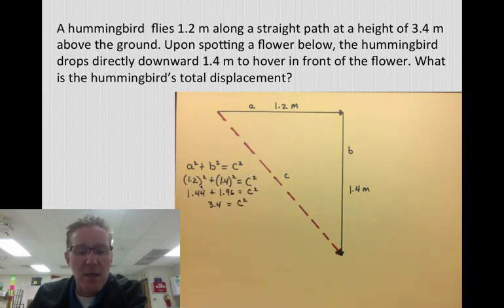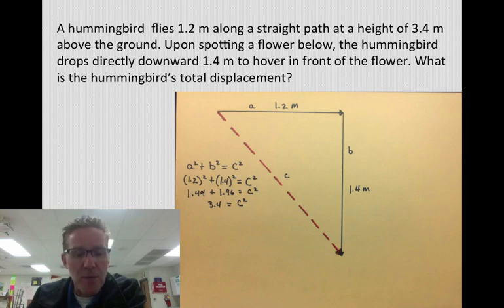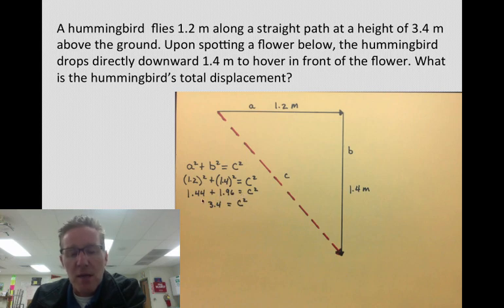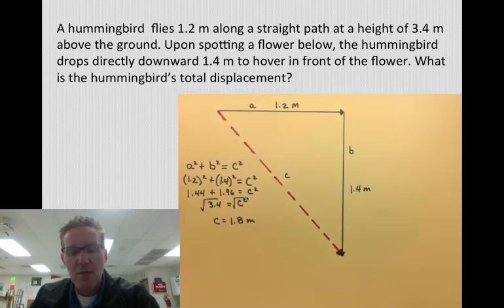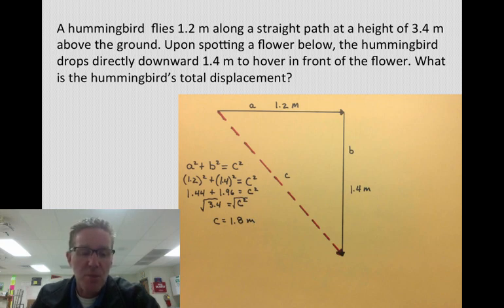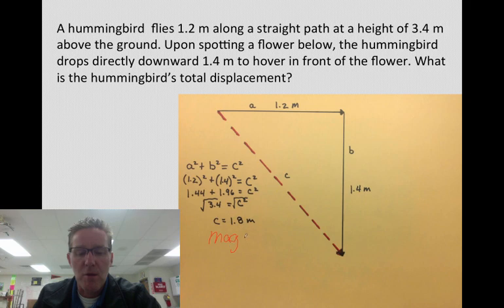So I just plug my numbers in. When I squared, I got 1.44 plus 1.96 and that gives me 3.4 equal to C squared, take the square root of those. And I got 1.8 meters. So at this point, all I have is a magnitude given here. Since it did say total displacement, that didn't say just give me the magnitude. It said give me the total displacement. That means I have to have a direction as well. At this point, I'm going to write magnitude here, just so we remember that's all we have.